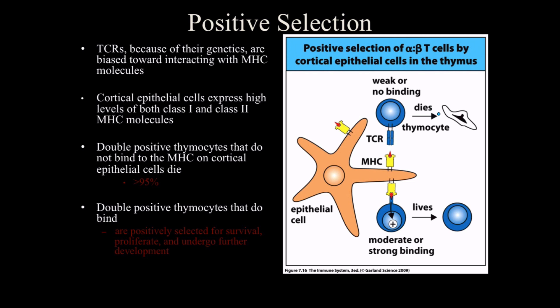For positive selection, T cells are kind of different from what we had with B cells. With B cells, we had negative selection first and then positive selection, but in this context, we have positive selection first, then negative selection.